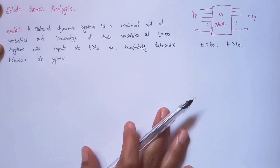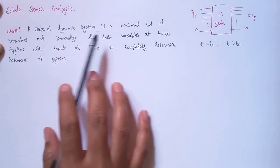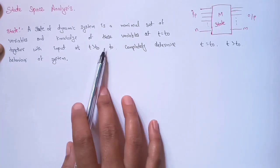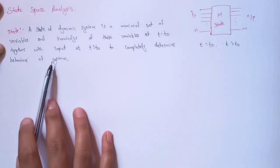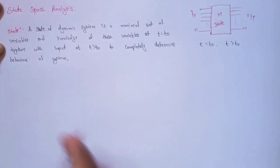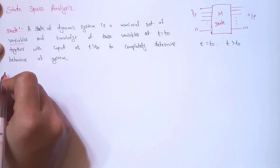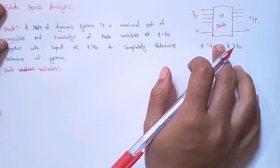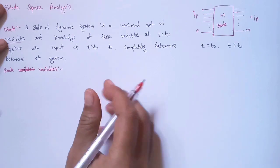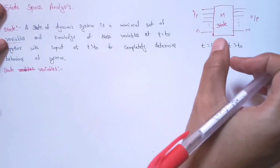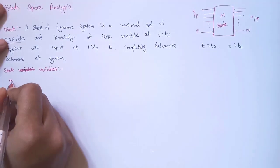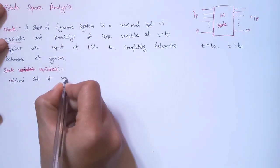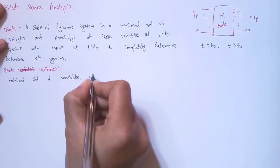So the key point is: a state is a minimum set of variables, and knowledge of these variables at t equals t0, together with the inputs at t greater than t0, completely determines the behavior of the system. State variables are a set of variables which determine the system's dynamicity — that is, how dynamic the system is. It is a minimal set of variables which determine the dynamicity of a system.